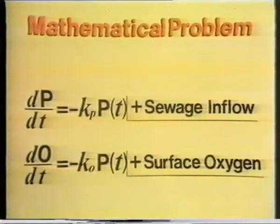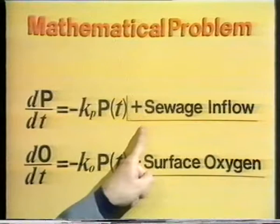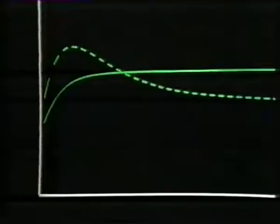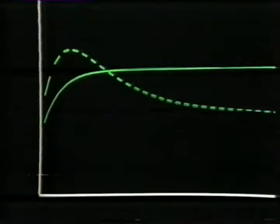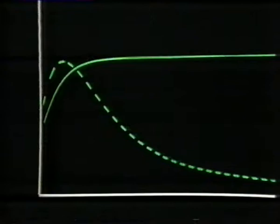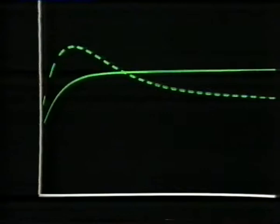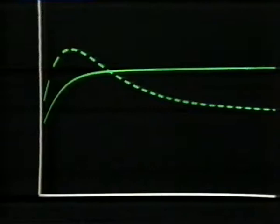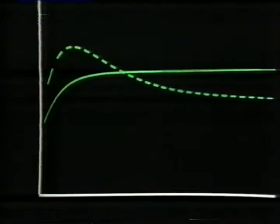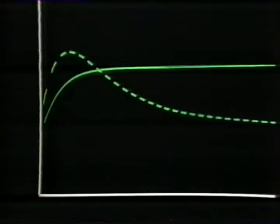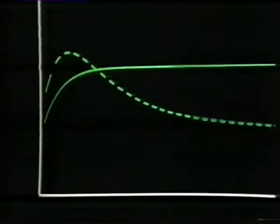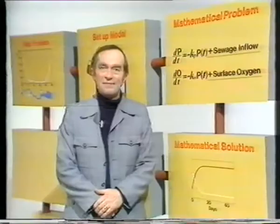Since we can't do anything about the input of oxygen at the surface, perhaps we should look at the way conditions change when we change the rate of sewage inflow. If we increase the rate of sewage inflow into the segment, the steady state concentration of oxygen goes down. And if we reduce the sewage inflow, the steady state concentration of oxygen goes up. While this does have some effect on the steady state level of pollutant, the important effect is on the steady state concentration of oxygen. If we want to keep the oxygen level above some critical value, there is a limit to the rate at which we can put in pollutant.